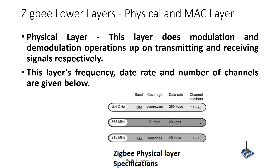The 2.4 GHz band represents the ISM band; its data rate is 250 kilobits per second and channel numbers are 11 to 26. The 868 MHz frequency band covers Europe, with a data rate of 20 kilobits per second and channel number 0. The 915 MHz ISM band covers America, with a data rate of 40 kilobits per second and channel numbers 1 to 10.